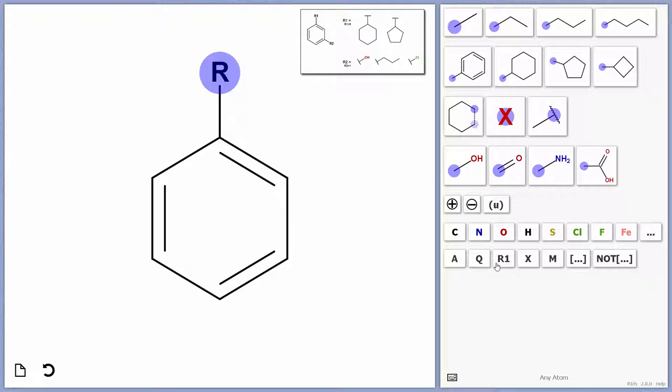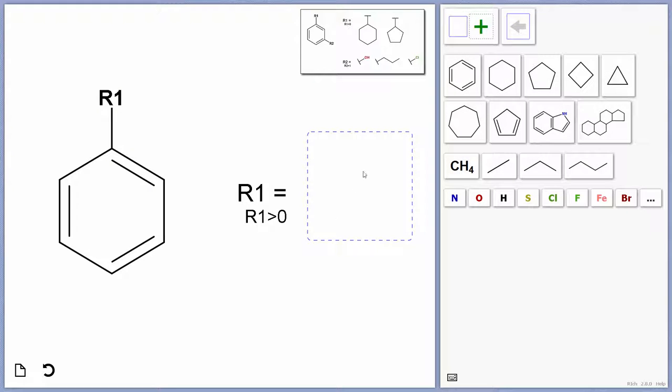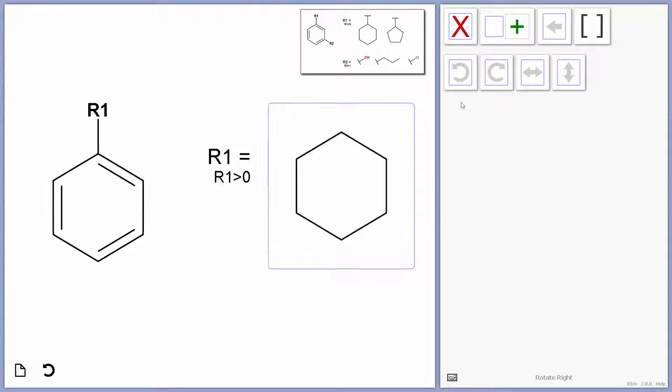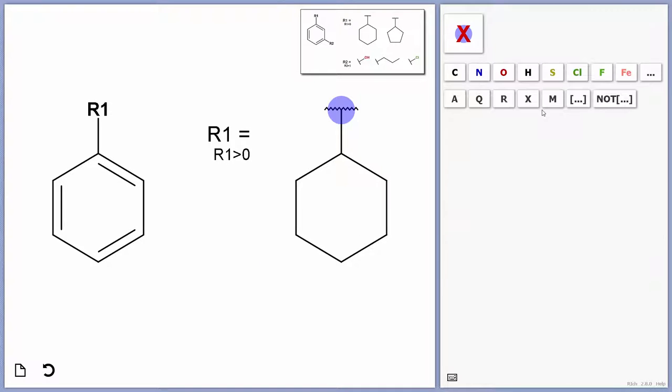I can then click the same button again, notice it's changed, and make that into an R1 group. You can see I automatically, on the right-hand side, get the option to draw a fragment to attach at that position, and I'm going to draw my first fragment and put on the attachment point.